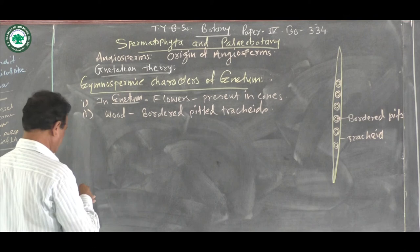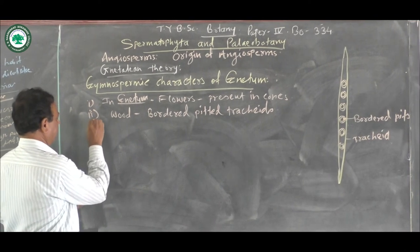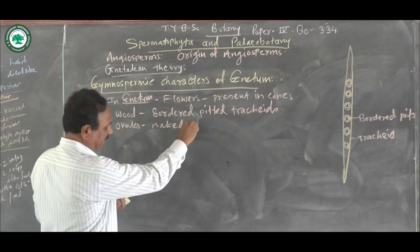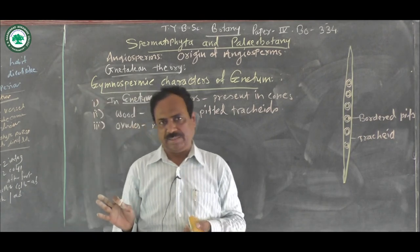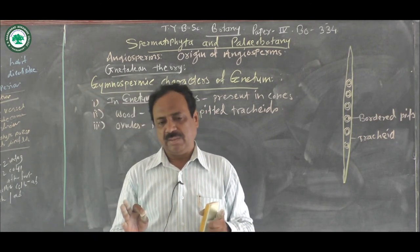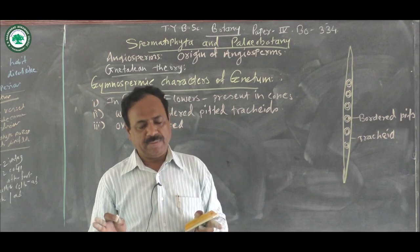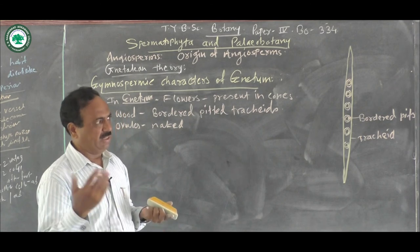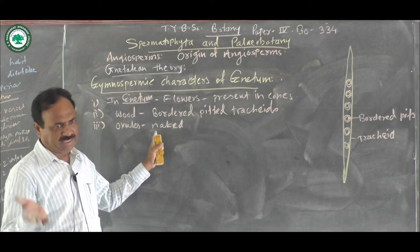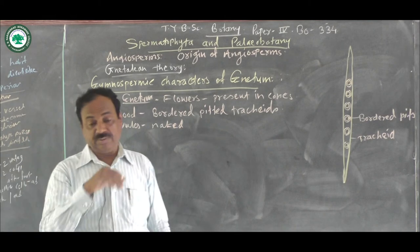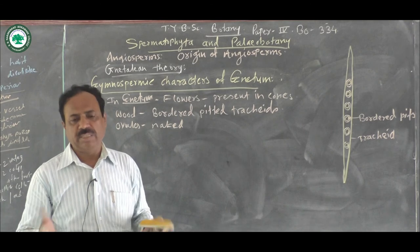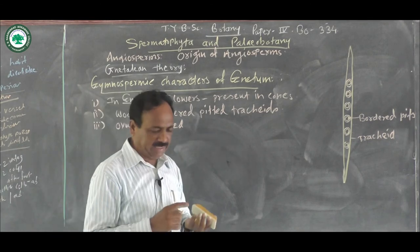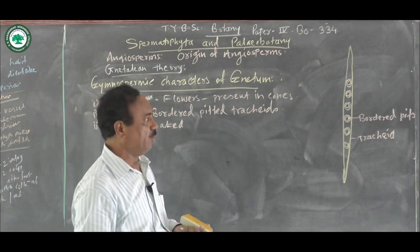In case of Netum, as it is a gymnospermic plant, the ovules are naked. Naked means there is no fruit formation. In Netum, there is no fruit formation and that's why the seeds are naked — ovules are naked. So after maturation, these ovules give rise to seeds, and if we observe the plant, the seeds are found in open condition. There is no fruit formation, unlike the angiospermic plant. The ovules are naked in this gymnosperm Netum, which is an important gymnospermic character.